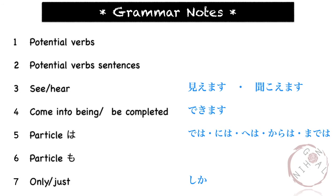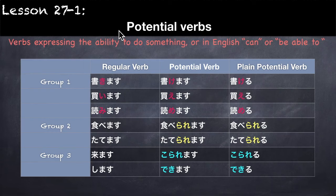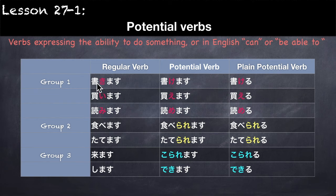Here are the grammar points for this lesson. In this lesson, we will learn about potential verbs — verbs expressing the ability to do something, or in English: 'can' or 'be able to.' To change a regular verb to a potential verb: for Group 1 verbs, just change the い syllable into the え syllable.